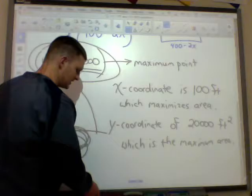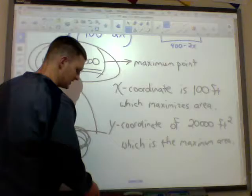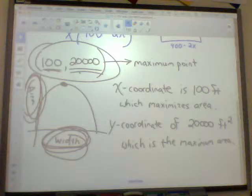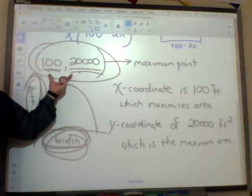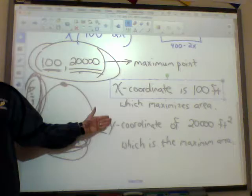So on this back side of the sheet that you're going to do for tonight, you have number 7 and number 8 to complete. They've already given you the graphs. All you have to do is identify the coordinates for that maximum point on the graph. And then you need to explain to me exactly what is the x and the y-coordinate. The 100 in this case and the 20,000 in this case. What do those mean?